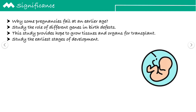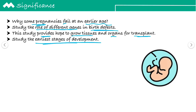So, is research ki significance kya hai? Kuch pregnancies jo hai fail ho jati hai early stage pe, so with the help of this research, we can find out why they are failing. And we can study the role of different genes in birth defects. This study also provides some hope to grow tissues and organs for transplantation under laboratory conditions. And we can also study the earliest stages of development.